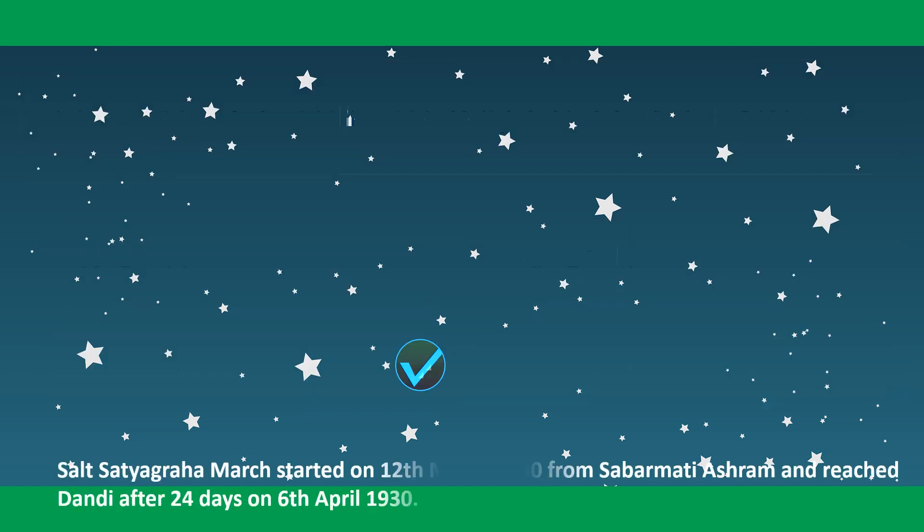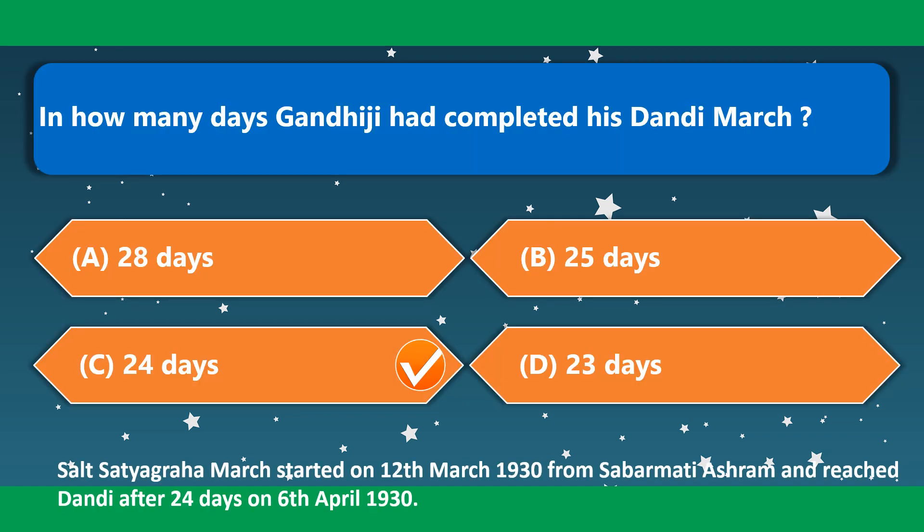In how many days did Gandhiji complete his Dandi March? In 24 days — option C is the correct option. The Salt Satyagraha march started on 12th March 1930 from Sabarmati Ashram and reached Dandi after 24 days on 6th April 1930.